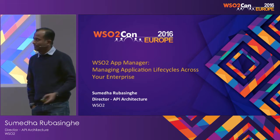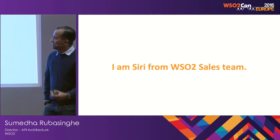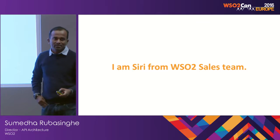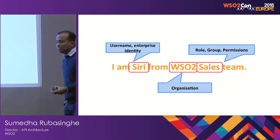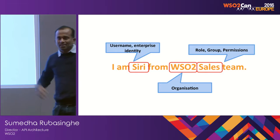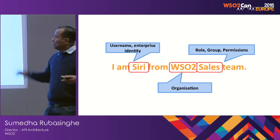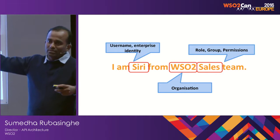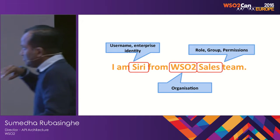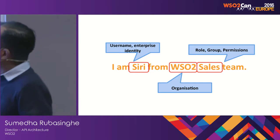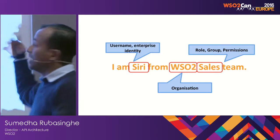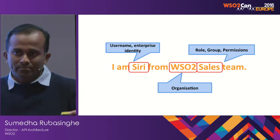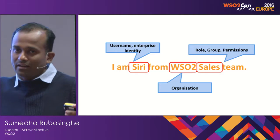To start with, let's assume that I'm Siri from the WC2 sales team. This statement has several things relevant to our IT operation. There's a username that gives an enterprise identity — the user, Siri — and there's an organization, and 'sales team' denotes a set of permissions. This goes into our internal LDAP so that all our users are kept there with their identity.